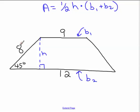So we've got a trapezoid with one of the lengths 8, 9, and 12, and we need to find that height in order to calculate the area.